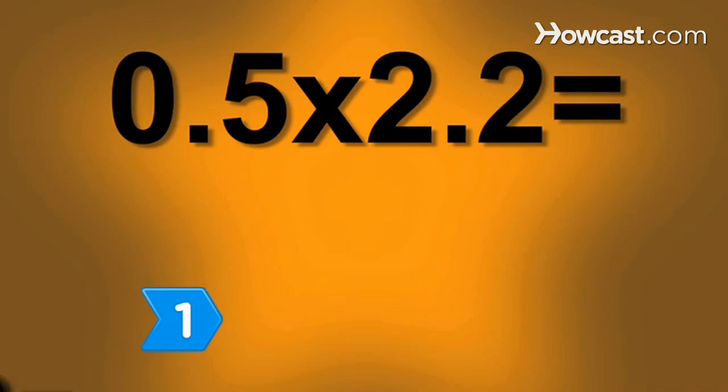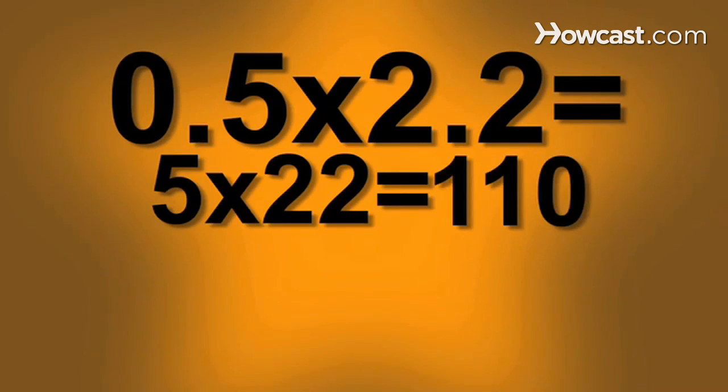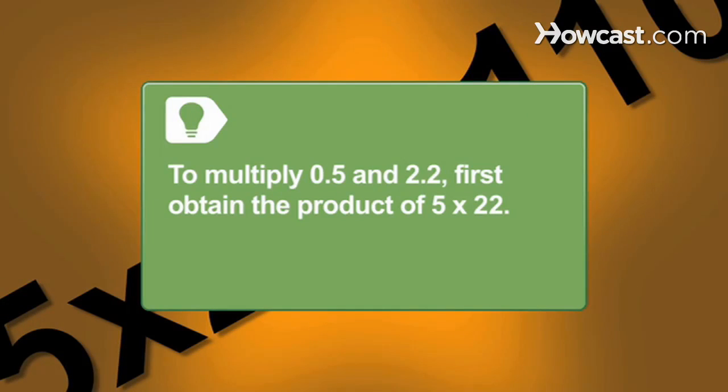Step 1. Multiply the two numbers containing decimals the same way you would if they were whole numbers containing no decimals. For example, to multiply 0.5 and 2.2, first obtain the product of 5 times 22, which is 110.